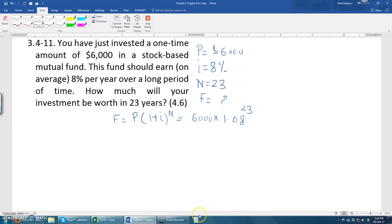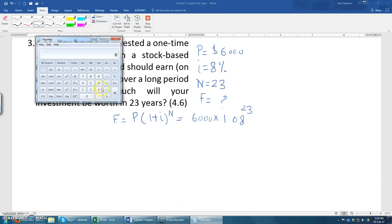So we can calculate it like this. So 1.08 power 23, that is this answer multiplied by 6,000.